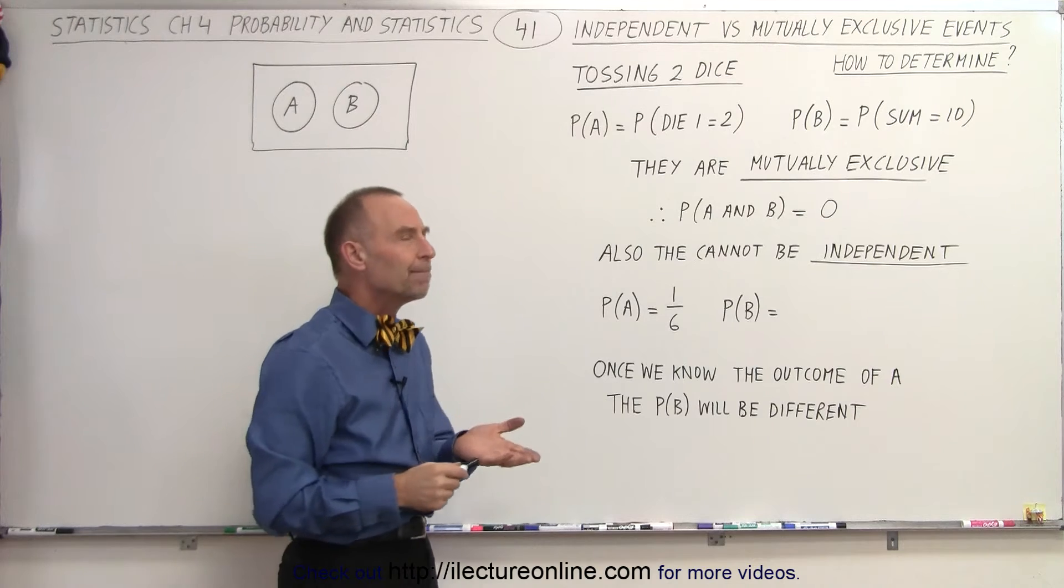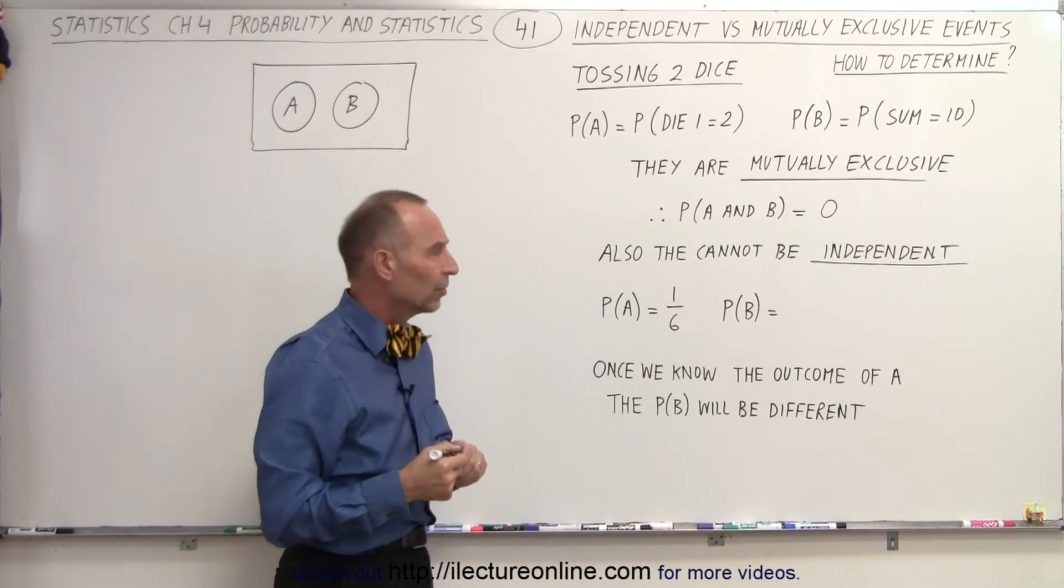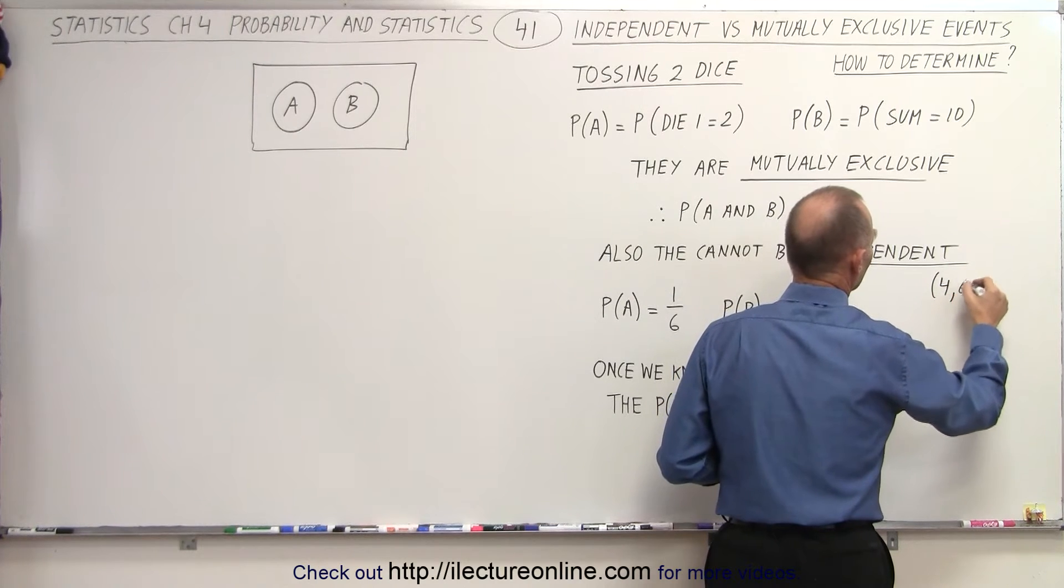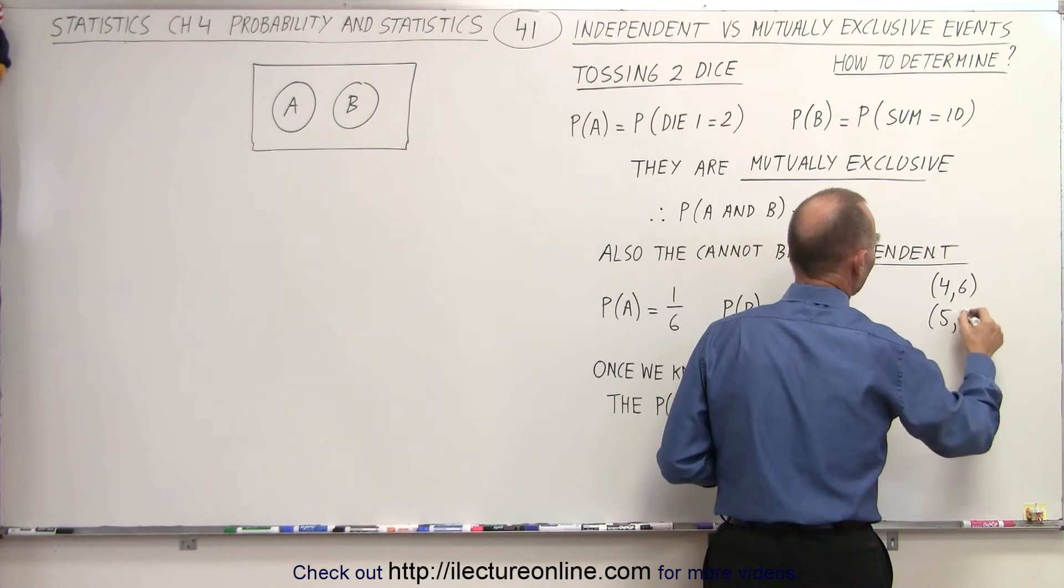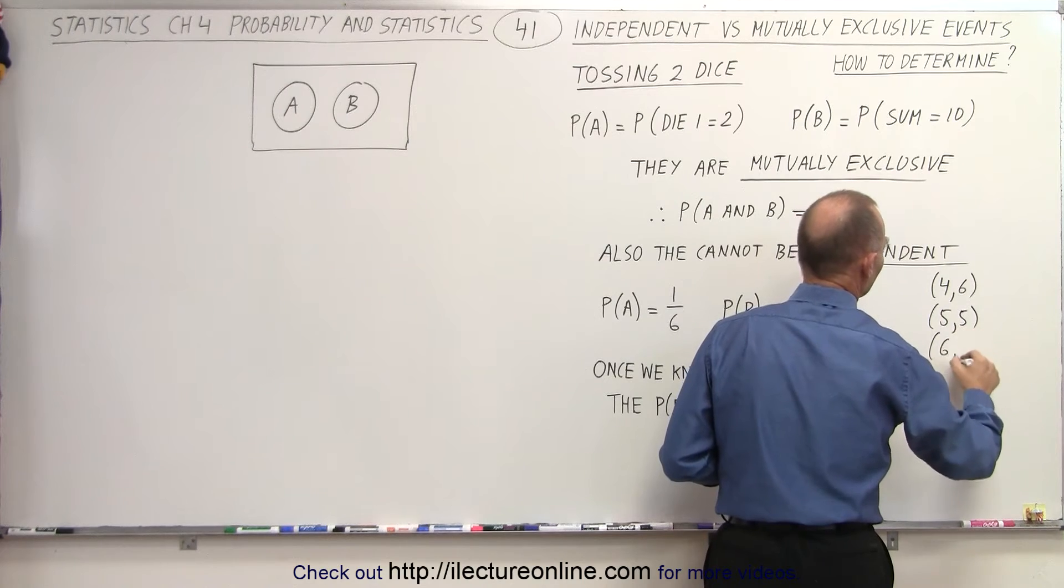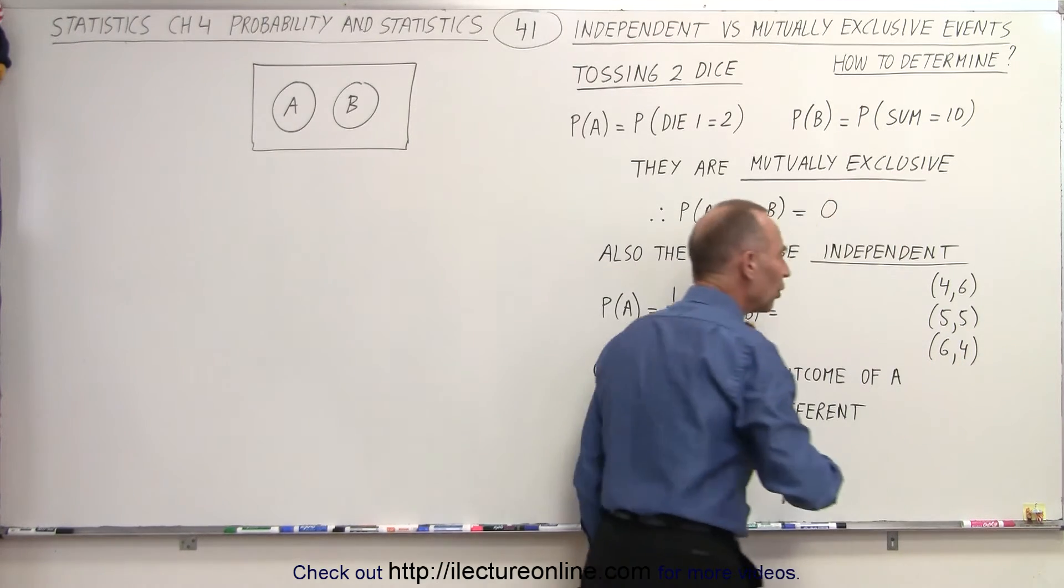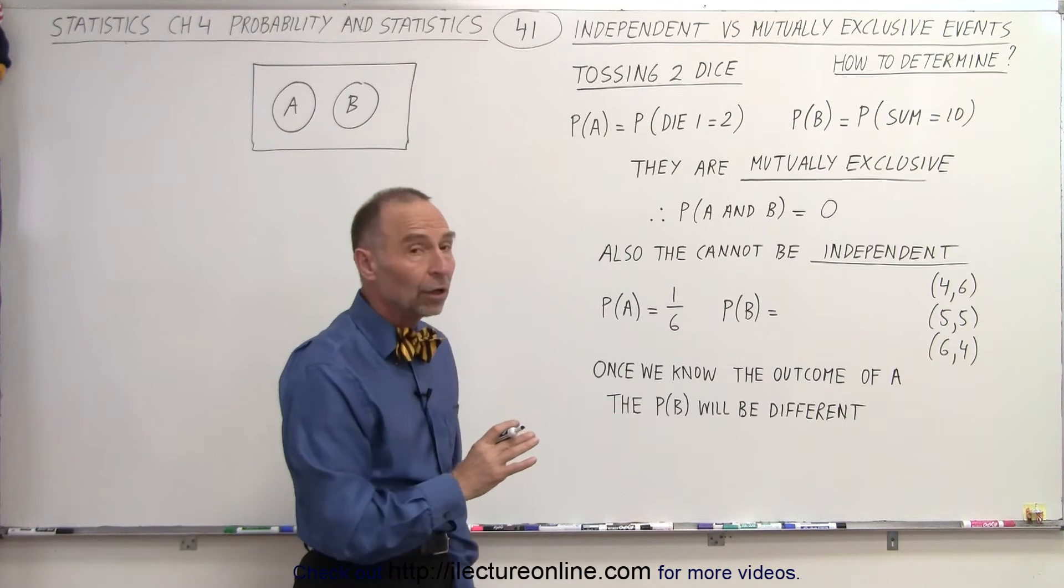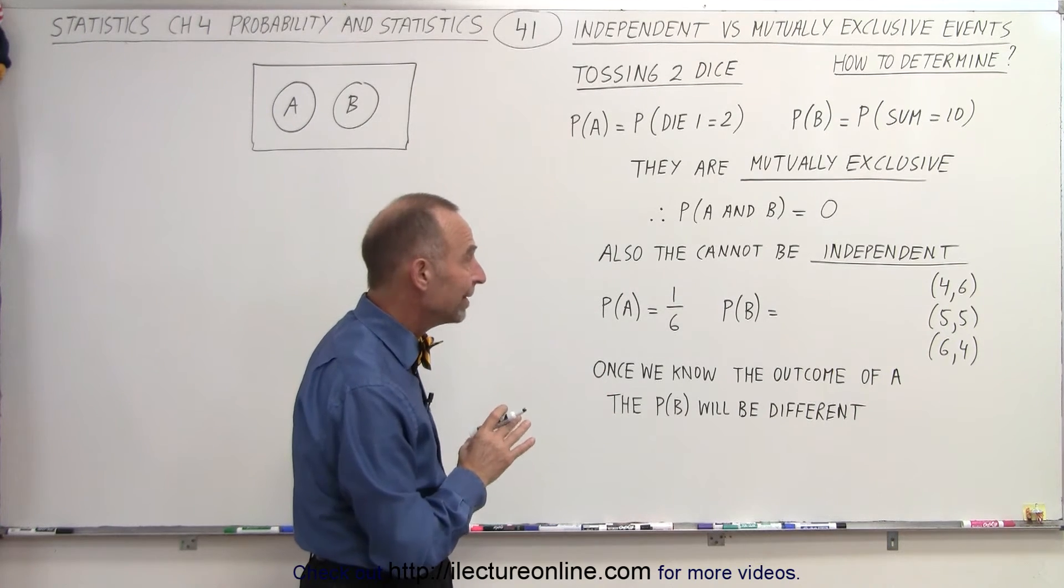What about probability of B? How do we get 10s? Well, let's see. The combinations are that we can have a 4 and a 6, we can have a 5 and a 5, and we can have a 6 and a 4. So out of the 36 possible combinations with two dice,